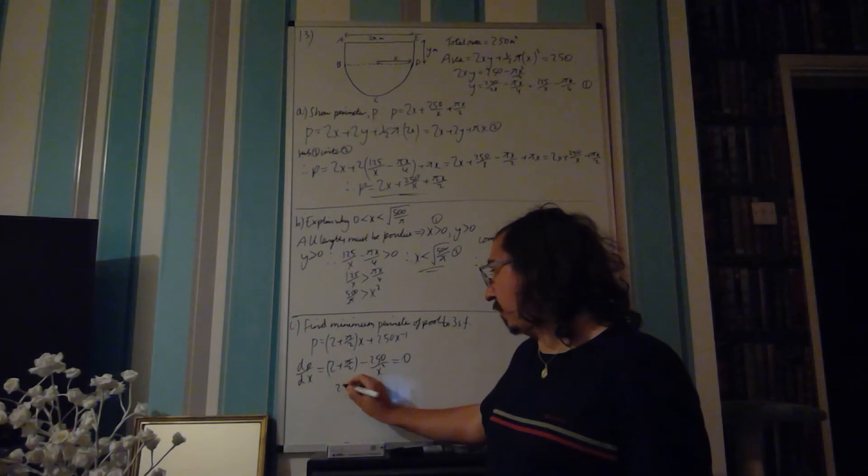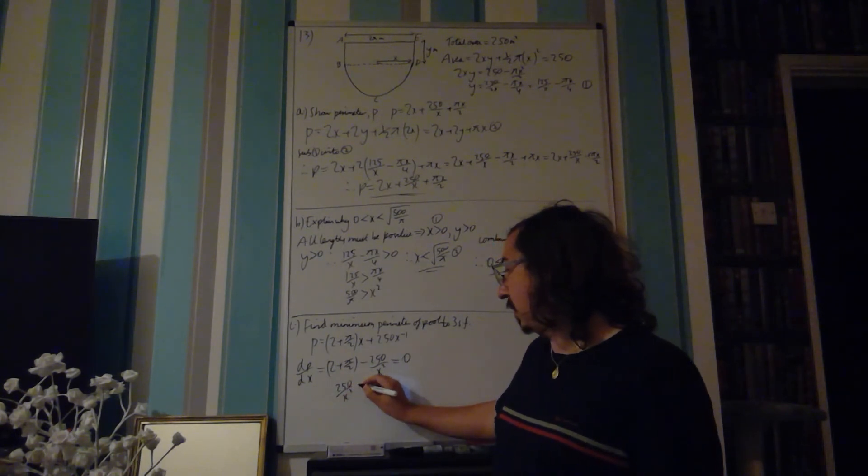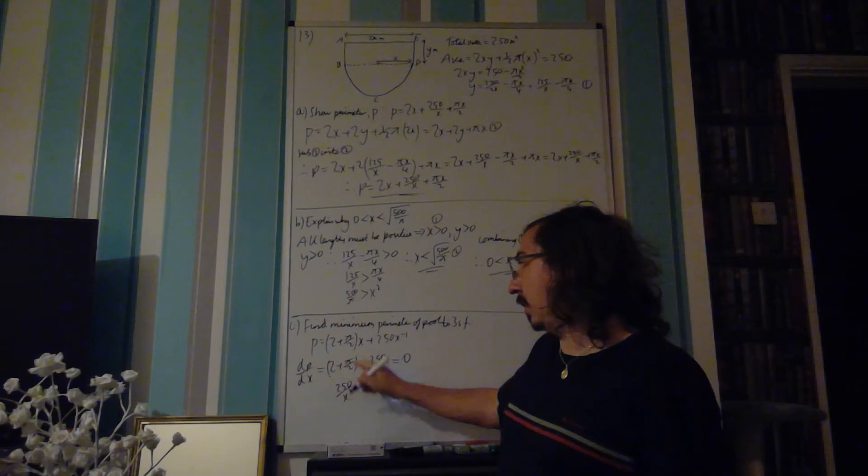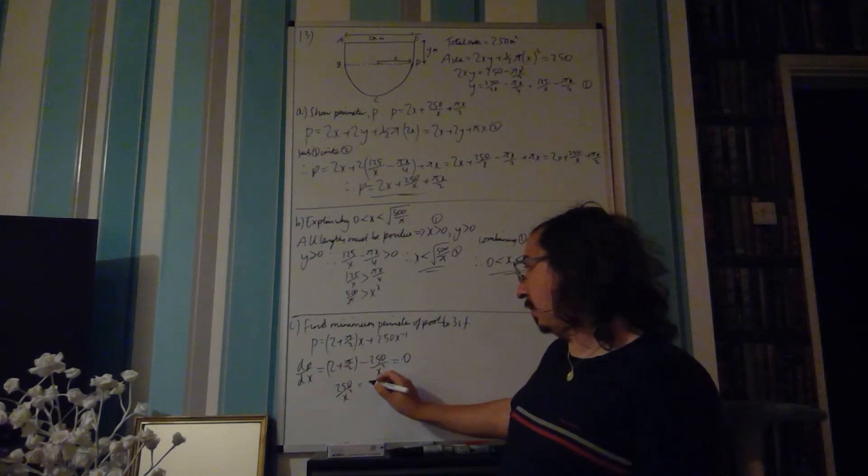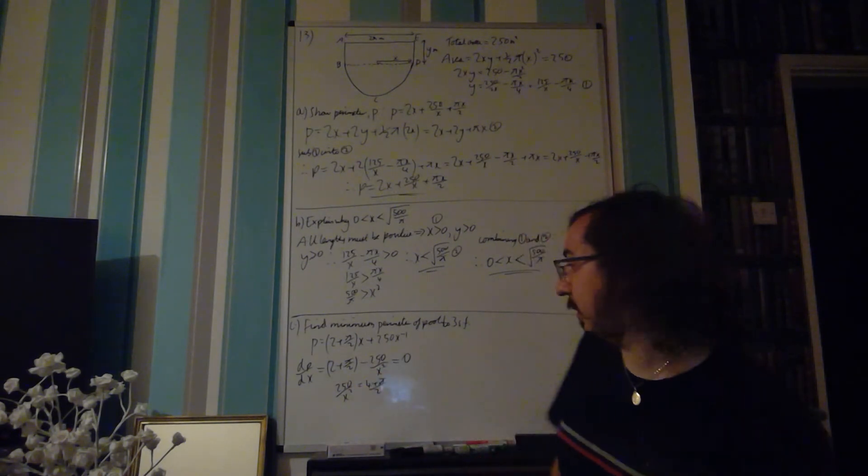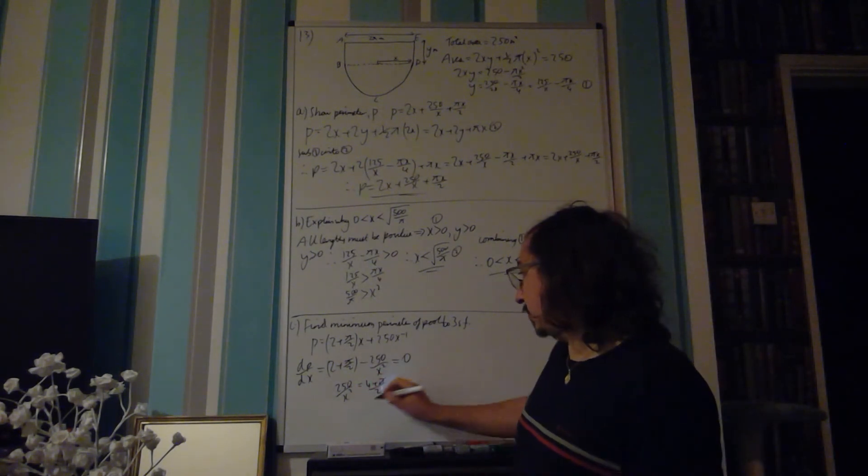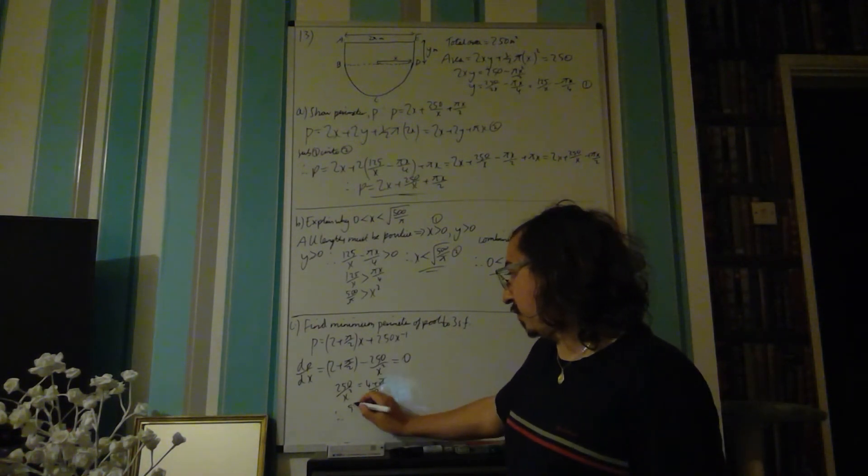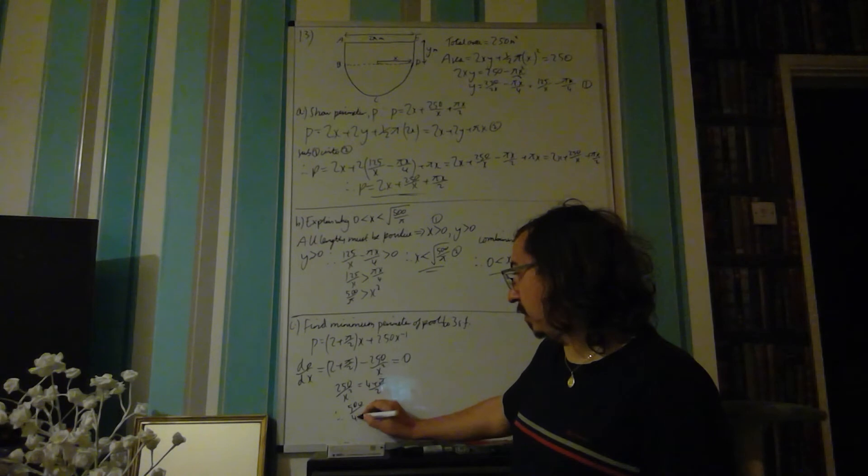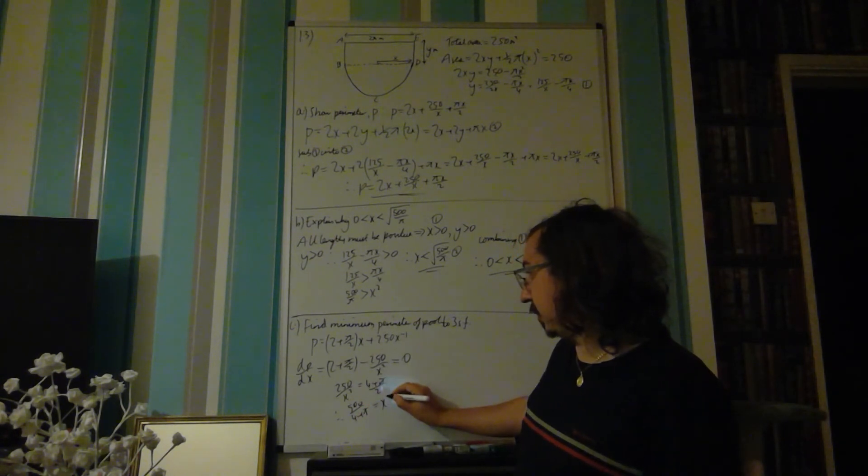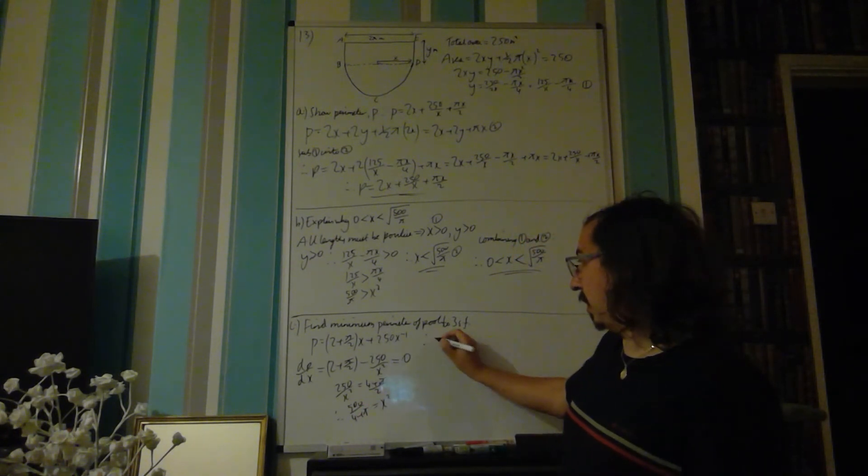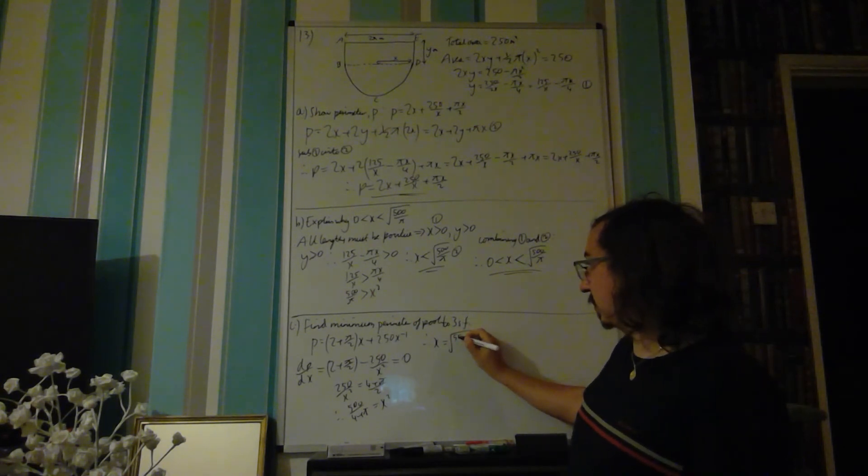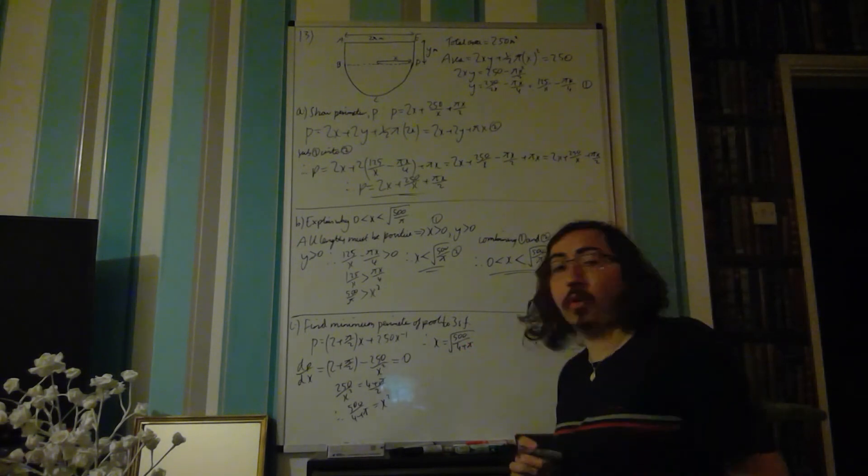Rearranging that then, we've got 250 over x squared is equal to, well, I can combine these into one fraction, so 4 plus pi over 2, like that. Rearrange again, I can state, therefore, x squared is equal to 500 over 4 plus pi, so x is equal to the square root of 500 over 4 plus pi.